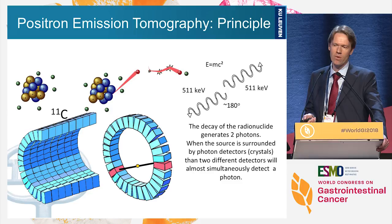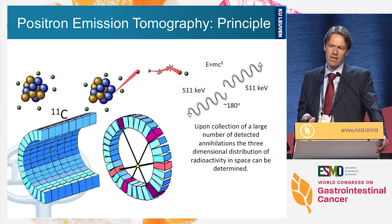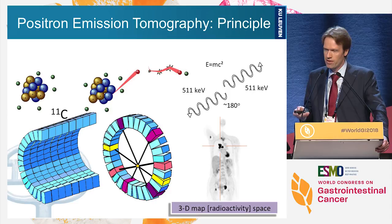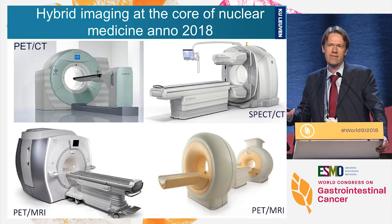If we collect many thousands, hundreds of thousands of these lines, we can identify the source of the radiation. It's very important to realize that a PET image is nothing less and nothing more than a three-dimensional map of the concentration of radioactivity in space — just numbers that tell us at a certain coordinate in space how much radioactivity is present.